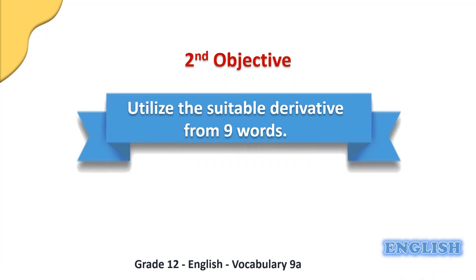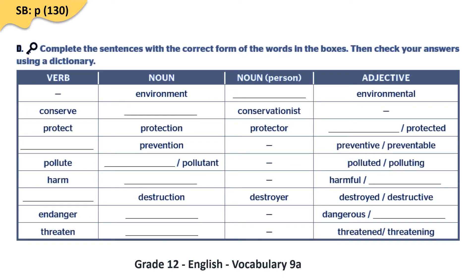Now for the second objective of today's lesson — utilizing the suitable derivative from nine words — we are going to form and use new words from given words. We will fill in the gaps in a table by providing the relevant part of speech for each word. The first gap requires the word environmentalist, meaning a person who supports the preservation of natural environments.